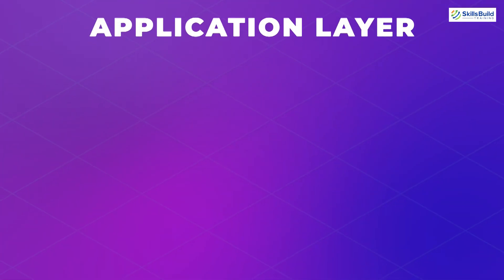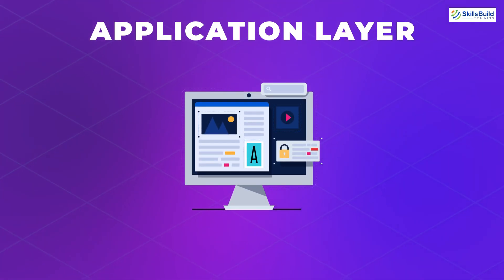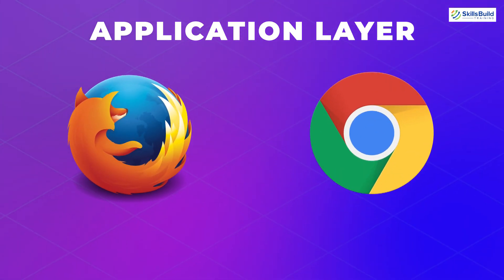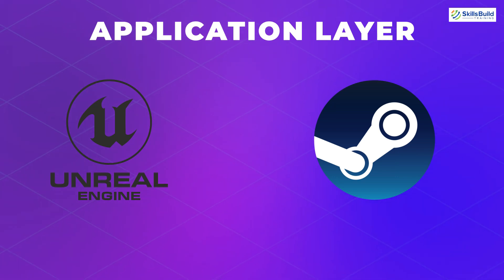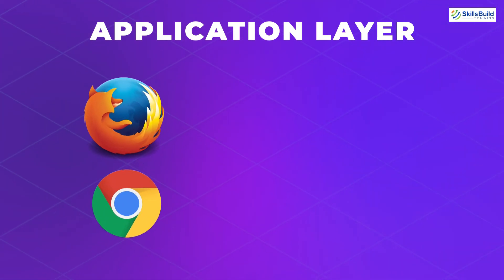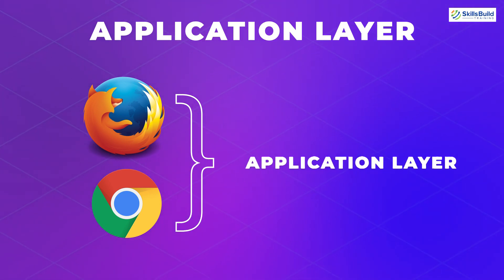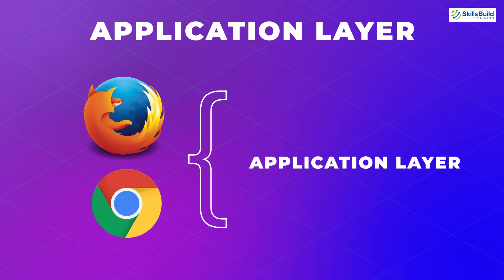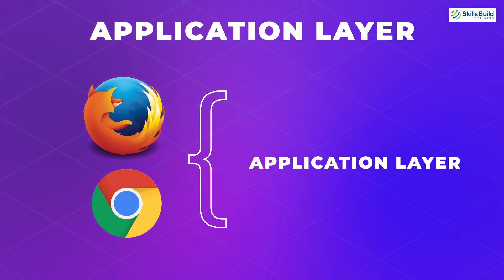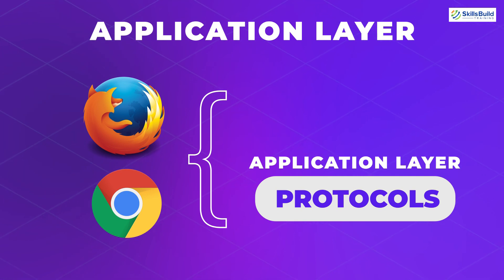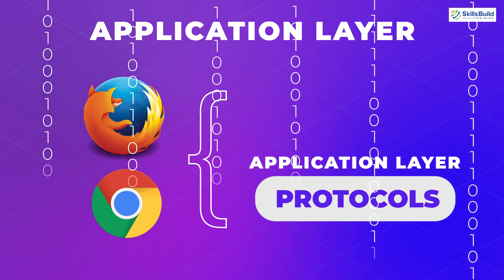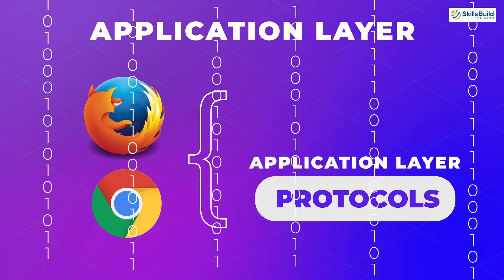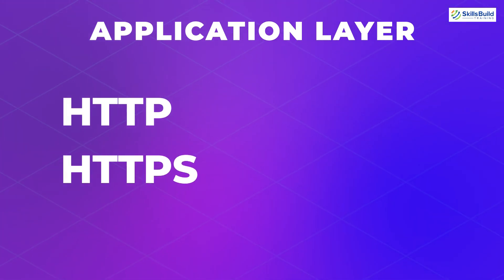Let's start with the application layer. At this layer, data gets interacted with directly through the use of applications — like your web browser, software, email client, or gaming engine. One thing to clarify: software applications are not part of the application layer. Instead, the application layer is responsible for the protocols and data manipulation on which software depends to present data to the user. At the application layer we have protocols: HTTP, HTTPS, and SMTP.